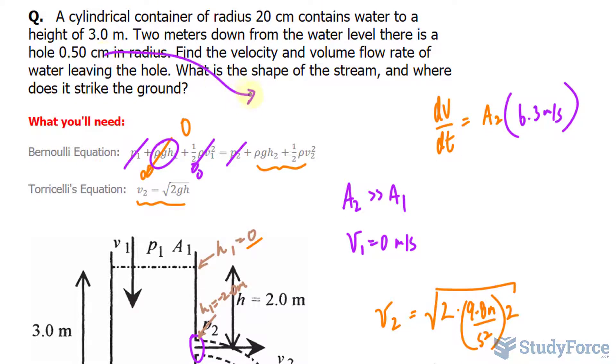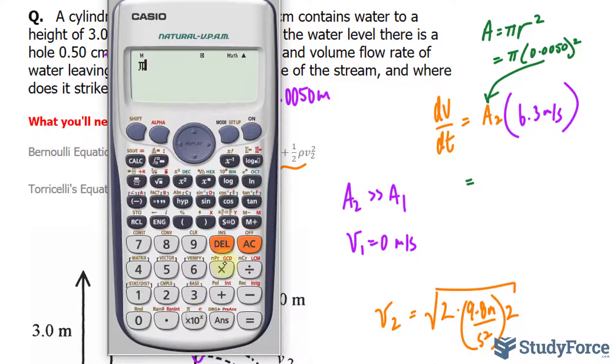We know the radius of that hole is 0.5 centimeters. I'll make that into meters so everything is consistent. Dividing by 100 gives us 0.0050 meters. The formula for the area of a circle is πr². So π times 0.0050 to the power of 2 gives us the area, which we plug in. π times 0.0050² times 6.3.